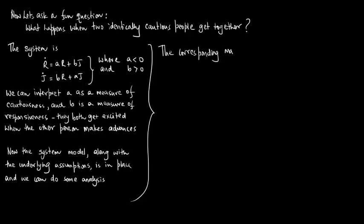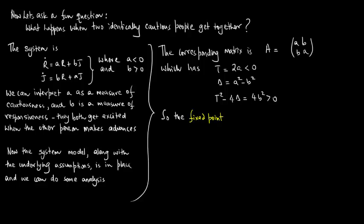The corresponding matrix is A equals [[a,b],[b,a]], which has the trace t equals 2a which is less than zero. The determinant is equal to a squared minus b squared, and t squared minus 4 delta equals 4b squared which is greater than zero. So the fixed point (r,j) equals (0,0) is a saddle point if a squared is less than b squared, and a stable node if a squared is greater than b squared.